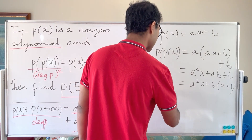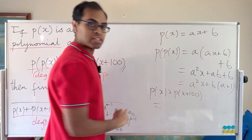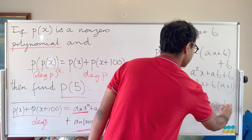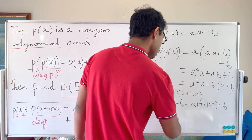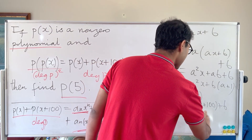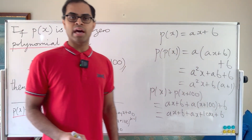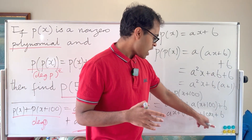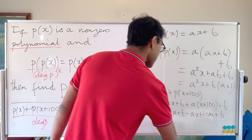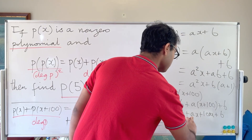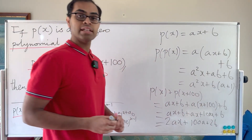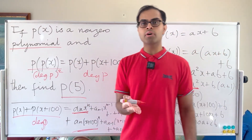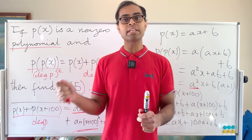On the right-hand side, p(x) + p(x+100) gives (ax + b) + (a(x+100) + b) = ax + b + ax + 100a + b = 2ax + 100a + 2b. Now we compare coefficients. It's always good to be careful with algebra. So the left-hand side is a²x + b(a+1) and the right-hand side is 2ax + 100a + 2b.